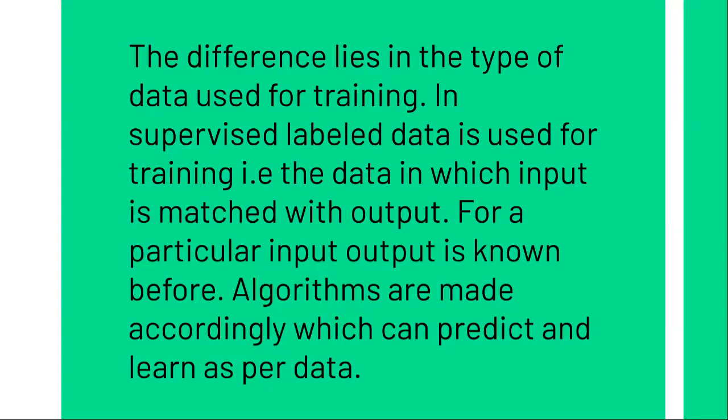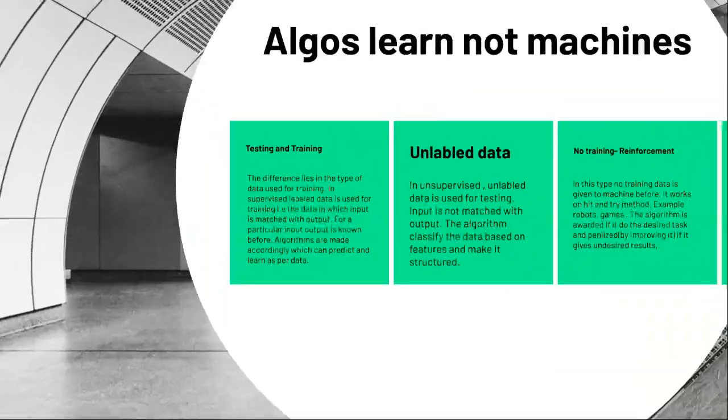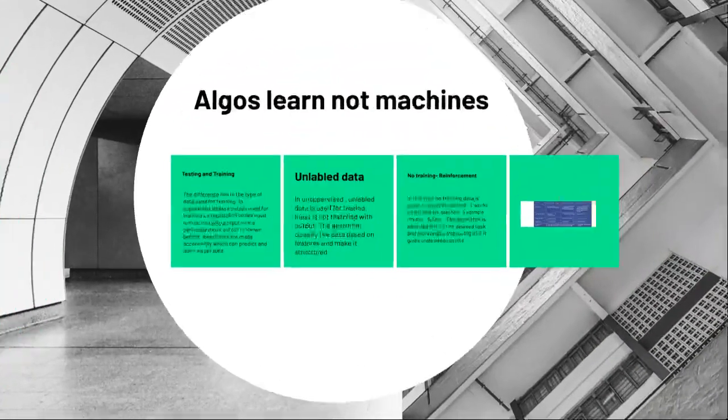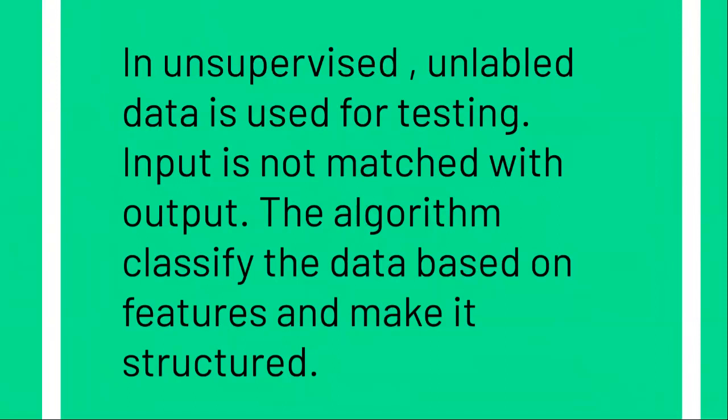This is supervised learning. Now in unsupervised learning, we give unlabeled data. The data given for testing is unlabeled. When we are training the machine, unlabeled data is given to it as well. In supervised learning during testing we also gave unlabeled data, but in unsupervised learning, unlabeled data is given even during training. Unlabeled means input is not matched with the output — there is no output column.